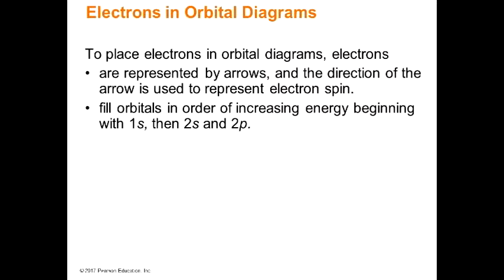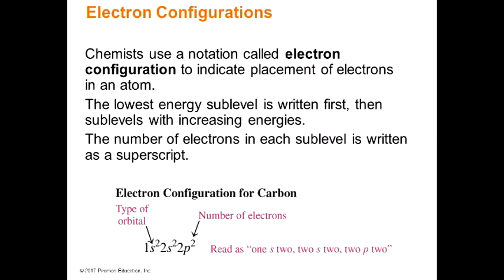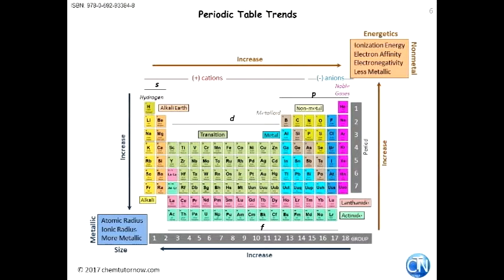We're going to place electrons in starting at the bottom energy level and work our way down. Let's do carbon on the periodic table. I start here: 1S — count 1, 2 electrons. Then 2S — 1, 2. Then 2P — 1, 2. That's it for carbon. Now magnesium — atomic number 12. Count from the top of the periodic table down through 12 blocks: 2 in 1S, 2 in 2S, 6 in 2P, then 2 in 3S. That accounts for all 12 electrons.